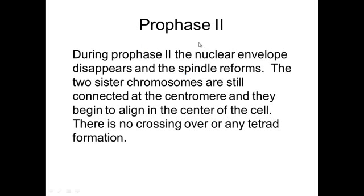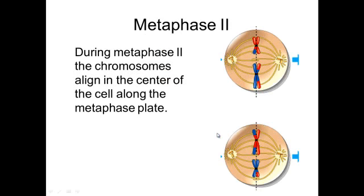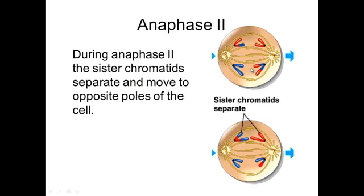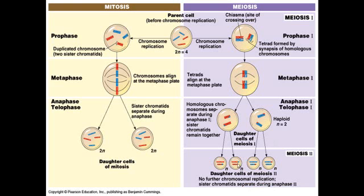Then you go into prophase two right away. If a nuclear envelope formed, it disappears, and the spindle reforms. The two sister chromatids are still connected at the centromere and start to line up — there is no crossing over this time, nor any tetrad, because the cell already divided and there are only two sister chromatids. In metaphase two, they line up on the metaphase plate and pull in opposite directions. In anaphase two and telophase two, the nucleus reforms and chromosomes unwind, leaving you with four different cells, each one different from the others.